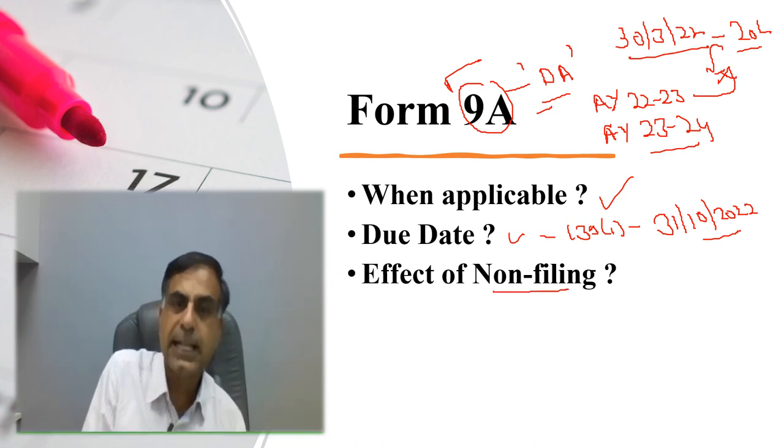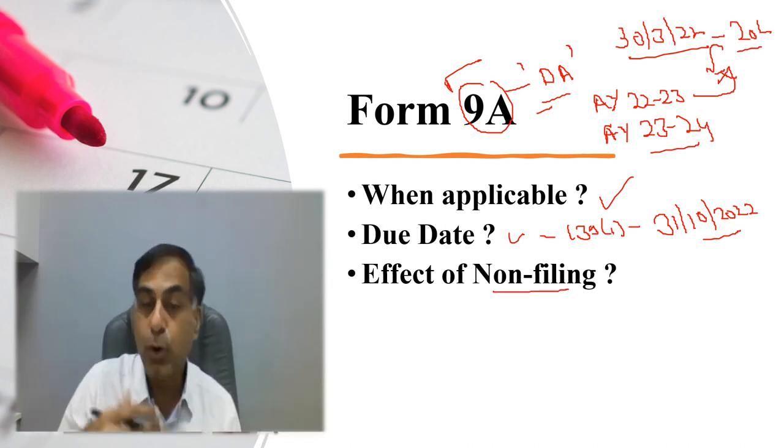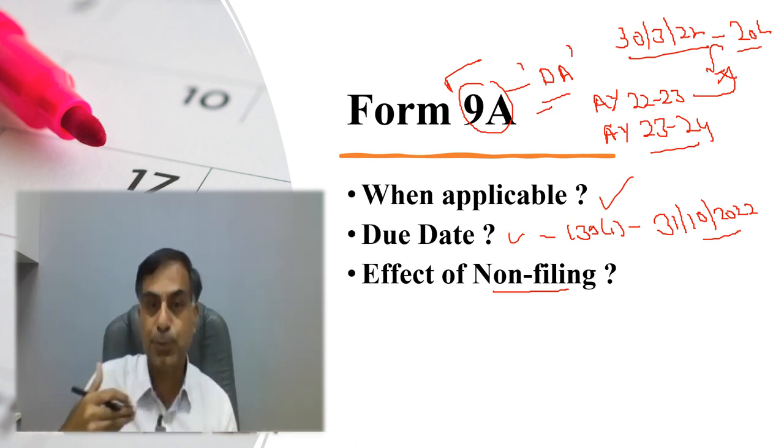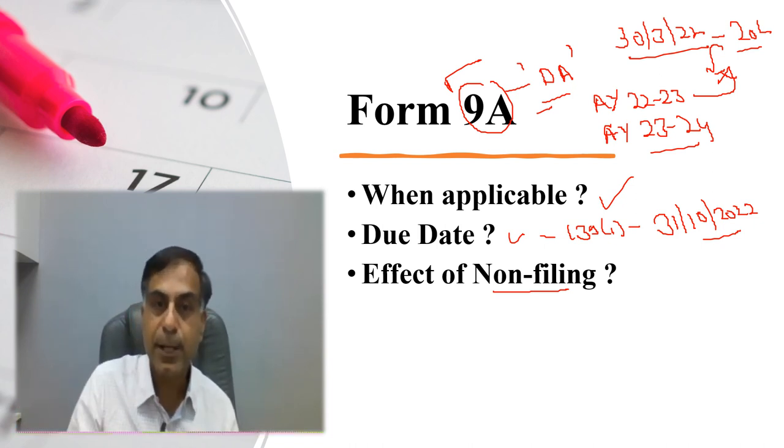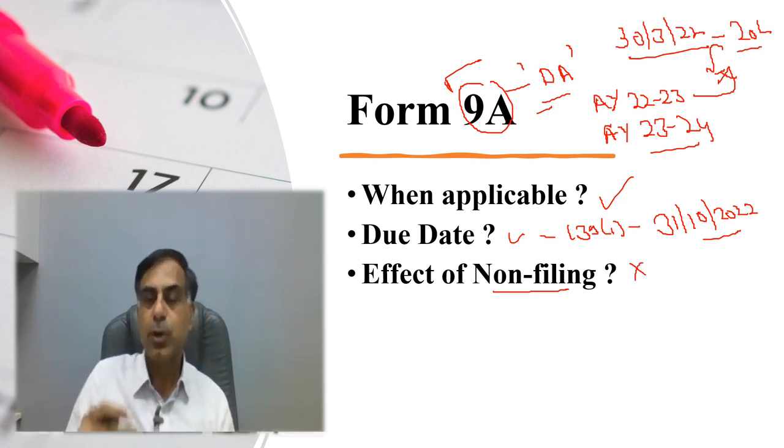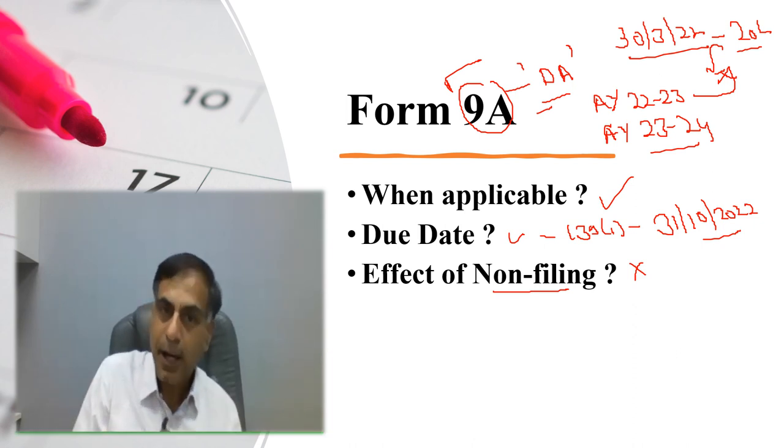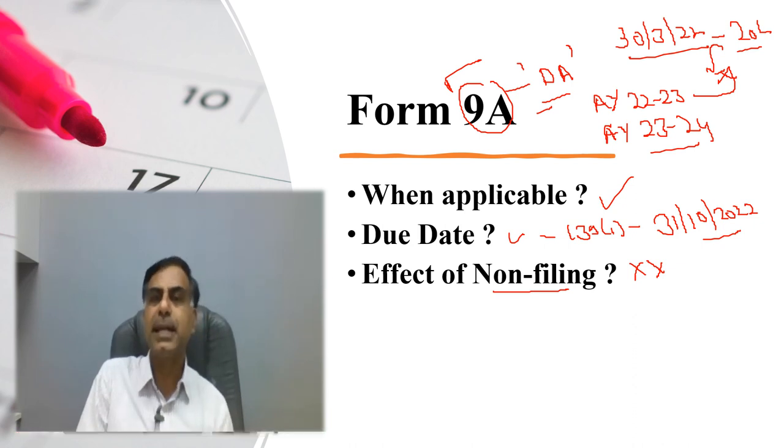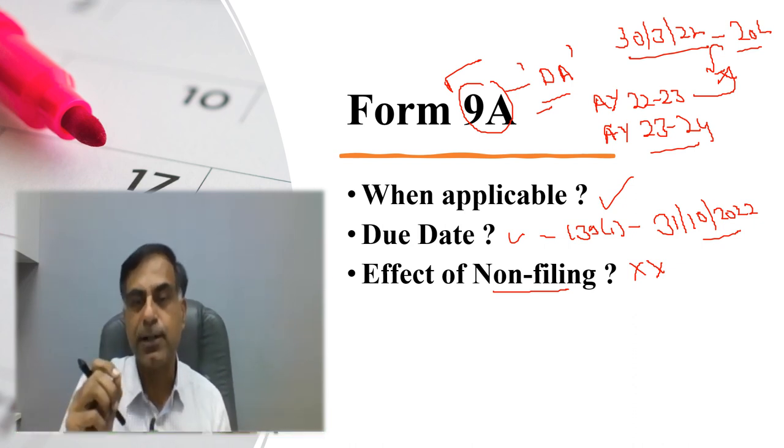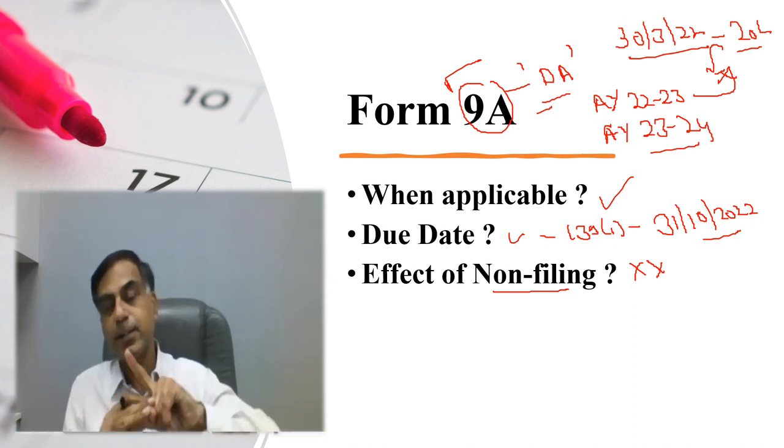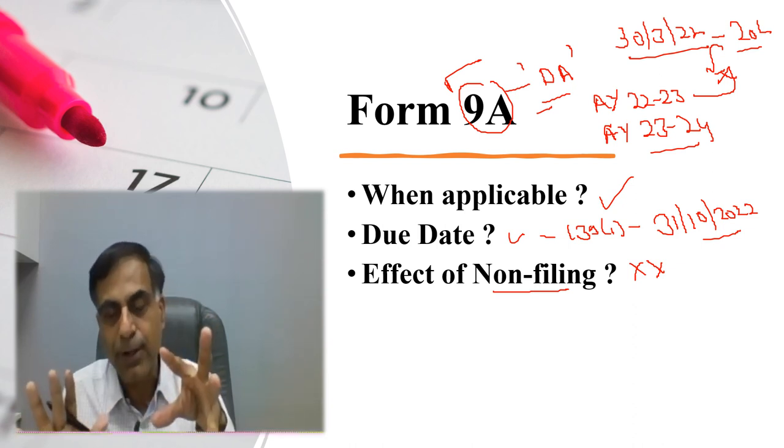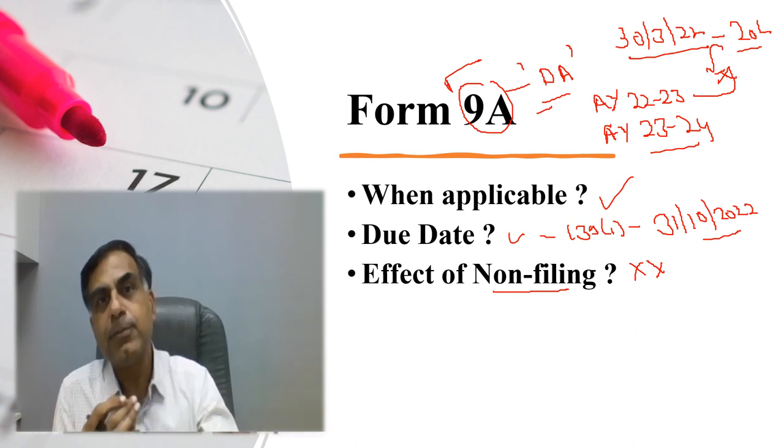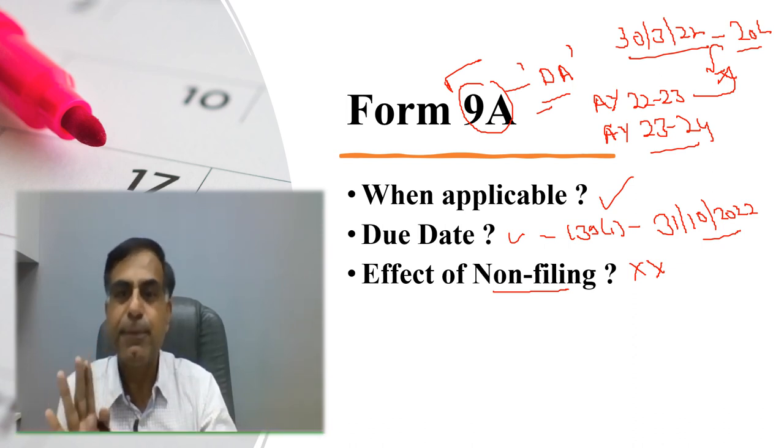Now what is the effect of non filing? If you are liable, and or I can't say that you are liable because 9A is optional. But suppose if you thought of that, okay, I should apply for 9A. I should apply for deemed application, but you are not doing so. Then you are left nowhere in terms of claiming this option of deemed application. However, for non filing of form 9A, there is no penalty as such because as I said that this is optional. A trust may or may not avail. So please understand form 10B was not optional, but form 9A is optional. Whether it opts for or not, it is its call. But if it opts for, then it will be entitled to avail the benefit of this deemed application concept.